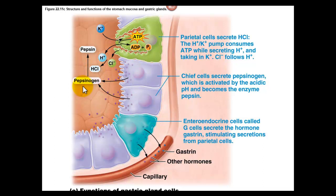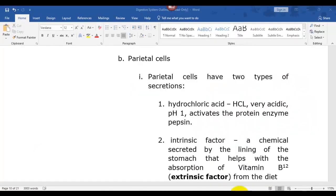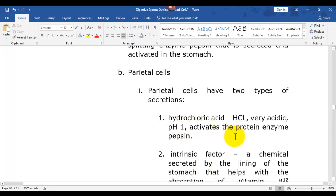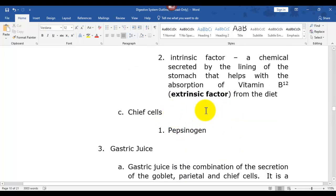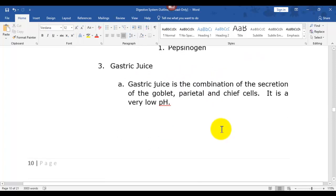Here's the reaction: a chief cell produces pepsinogen, and when it mixes with HCl you get pepsin. Pepsin is now active and breaks down proteins into peptides, so it starts protein digestion. If somebody is low in hydrochloric acid they will not be able to digest proteins as well. Pepsinogen is enzyme number two — its inactive form. Gastric juice is basically hydrochloric acid and all the enzymes mixed together with a little mucus.